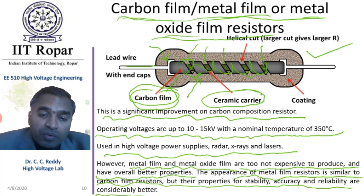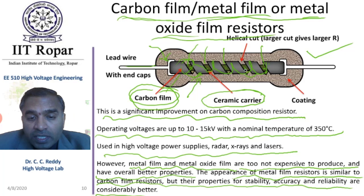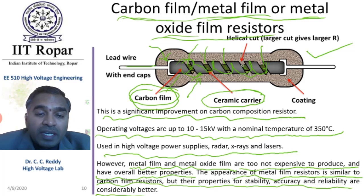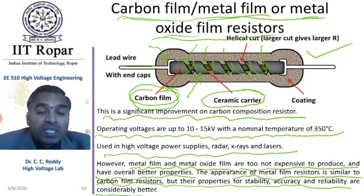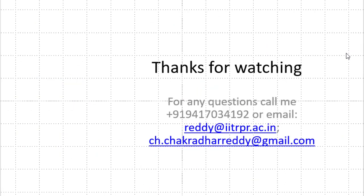In order to avoid this flashover, the gap is increased and the depth of the groove is also increased. Special constructions are possible for high voltage applications. This covers carbon film, carbon composite, metal film, and metal oxide resistors. Thank you for watching. Please stay tuned.